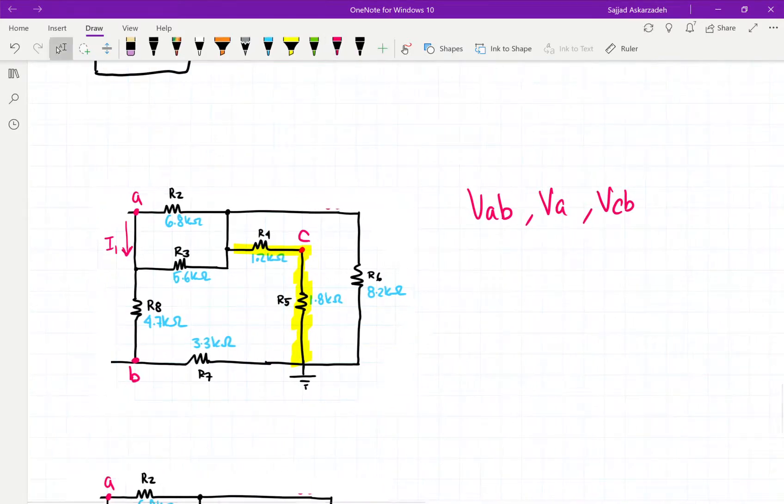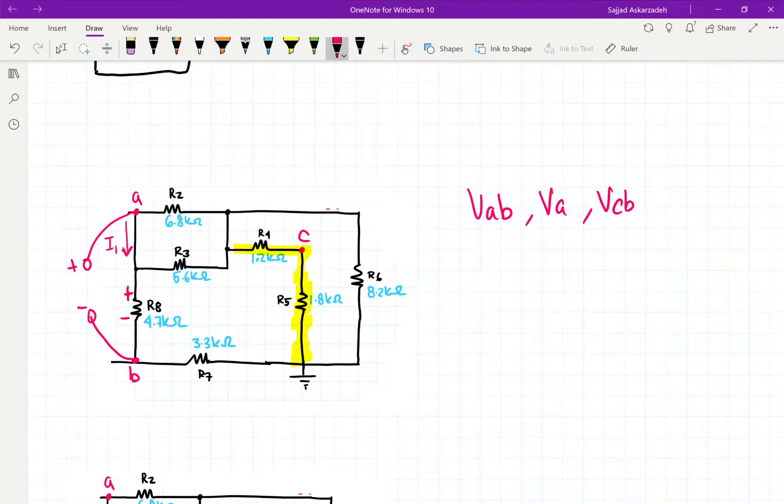First thing we're going to do is try to find what VAB is. This VAB is pretty much this one here. So VAB is the voltage on this resistor here, R8.